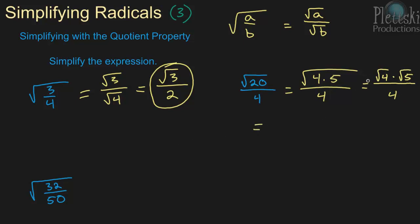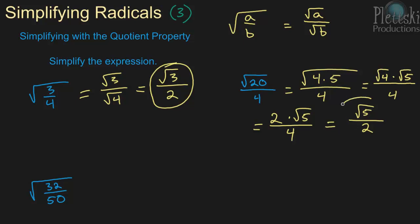And now we can rewrite it and take the square root of 4, so that's 2 times the square root of 5, and that's all over 4. And now we can simplify the 2 and the 4 — they're both divisible by 2. So 2 divided by 2 is 1, leaving us with just the square root of 5 on top. And 4 divided by 2 is 2. So it's the square root of 5 over 2. And we're done — there's nothing more that we can do with that one.